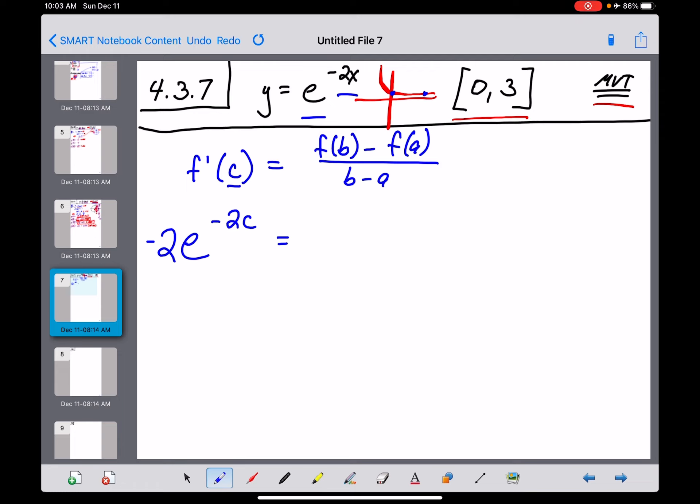the slope of the secant is going to come from over here on the right side, where we take 3 for our b value, 0 for our a value, and plug them back into the original function. So f of b means f of 3, that would be e to the negative 6th power, not a whole lot of fun, minus f of a, e to the 0 power is just going to be 1. All over b minus a, that would be 3 minus 0, which is just a 3 down here on the bottom.